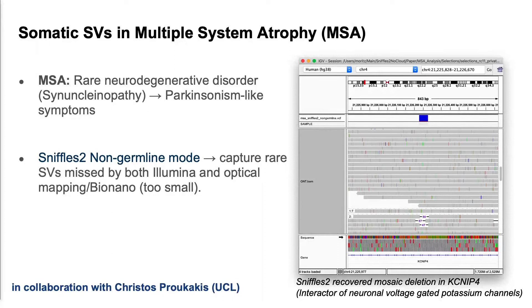We are working together with Christos from UCL on this. We took a sample from a brain from an MSA patient - a rare neurological disorder with Parkinson-like symptoms. Sniffles 2 non-germline mode identified multiple structural variants at low frequency in this brain sample. One highlighted example is a small STR contraction of 40-50 base pairs visible in three reads, discovered in KCNIP4, which is important for neurological disease and related to a potassium channel. We validated multiple structural variants by overlapping with a high-coverage Illumina dataset and a 600x coverage Bionano dataset, finding a good validation rate.